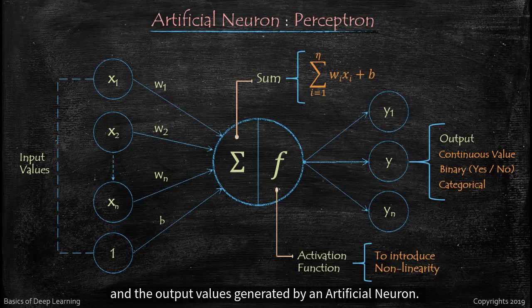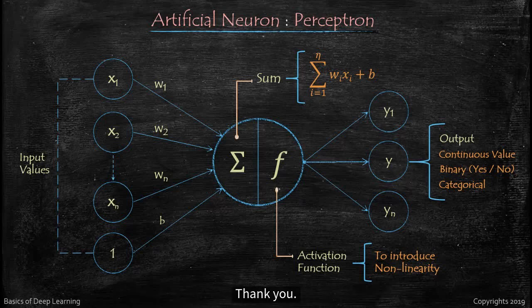And finally we have seen an artificial neuron and its component like input values, a weighted sum, an activation function, and the output values generated by an artificial neuron. So this is all about an artificial neuron, also called as perceptron. If you have any questions, just comment on this video. Thank you.